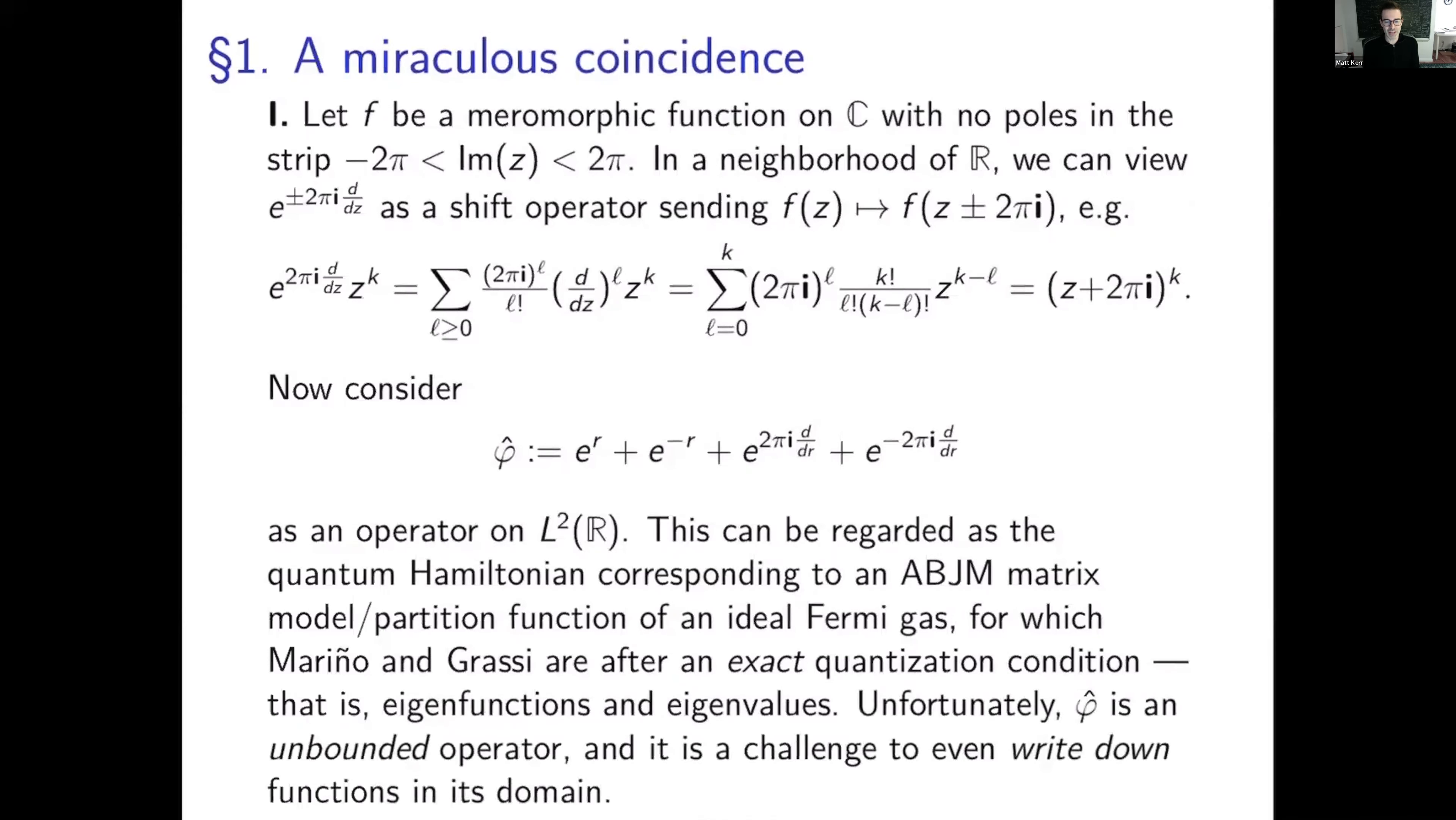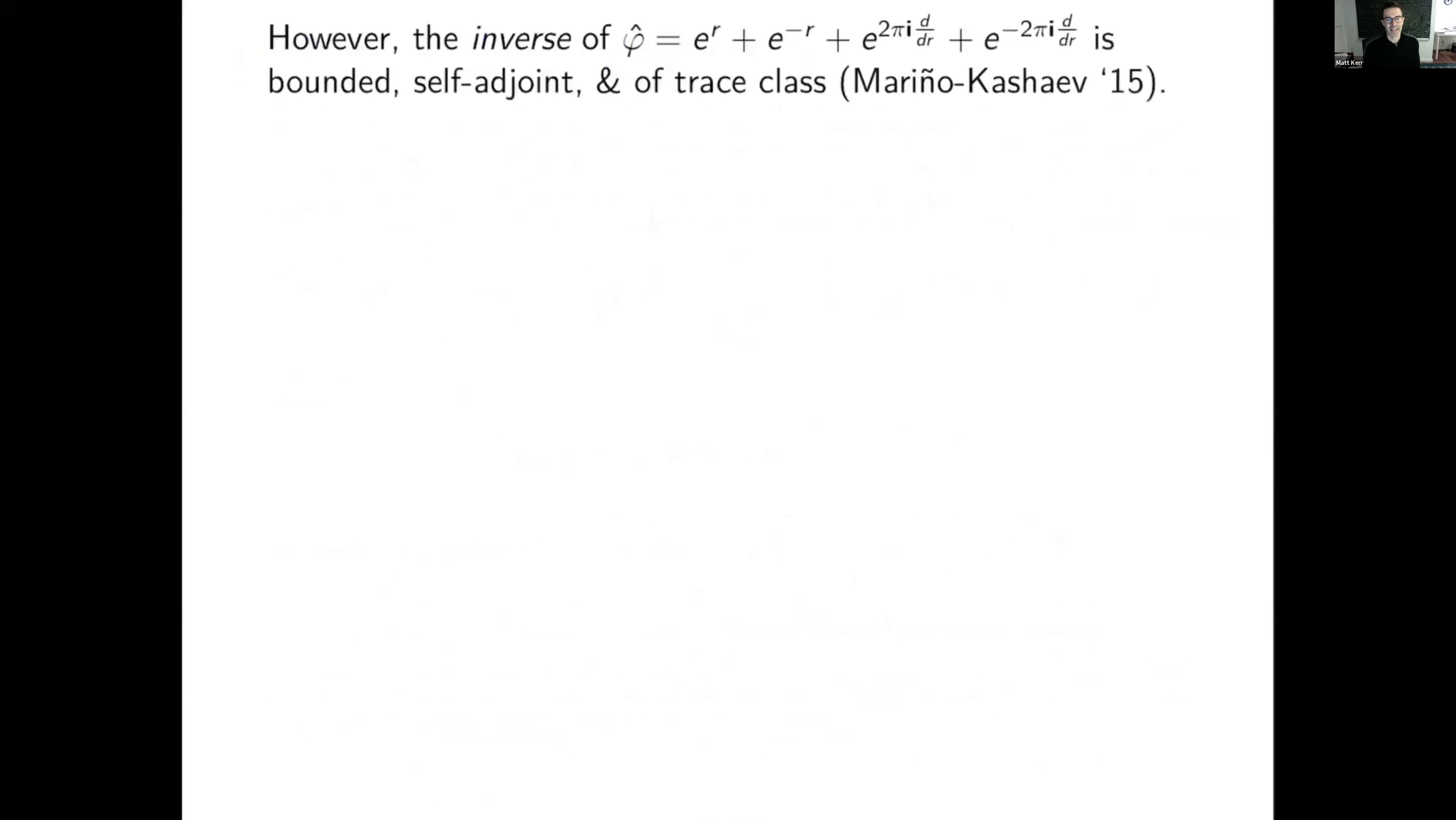So we want eigenfunctions and eigenvalues for this operator. Unfortunately, though, this is a nasty operator. It's unbounded. It's a challenge to even write down functions in its domain, but it turns out it has a very nice inverse. It's bounded, self-adjoint, and a trace class. You can take the sum of the eigenvalues of the inverse and that converges.